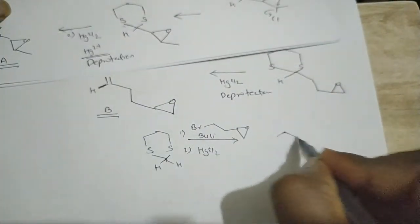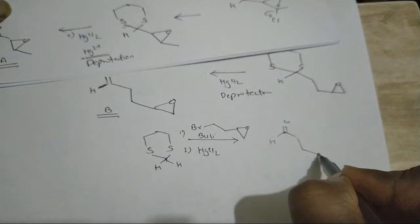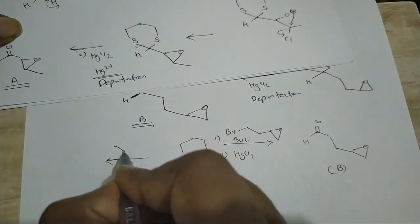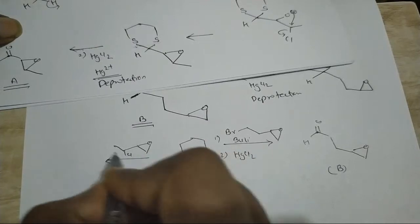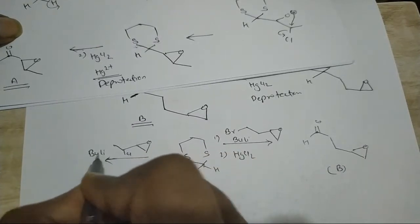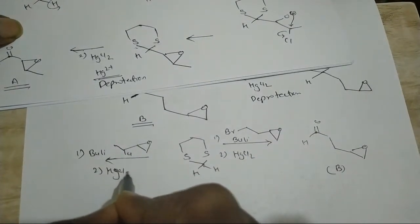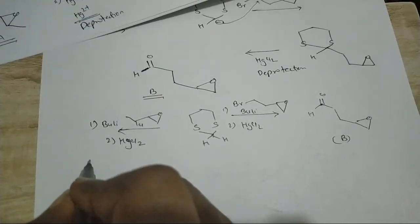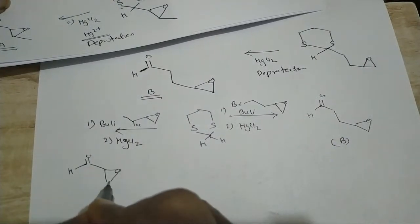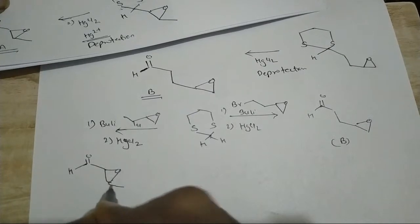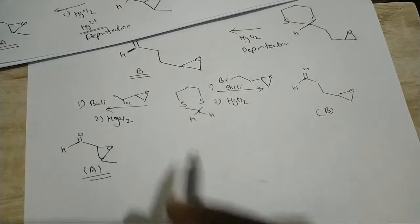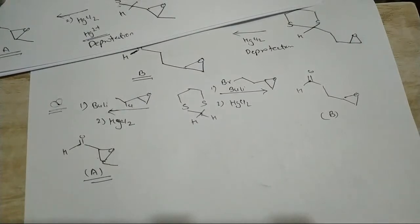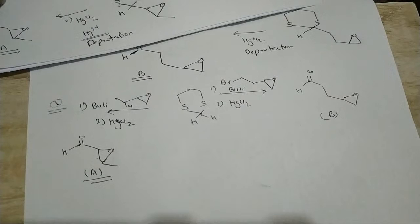We get product B here. And for A, it is also treated with n-butyllithium and then HgCl₂, giving a double bond — this is our product A. So this was a question of protection and deprotection of dithianes. Please like and share.